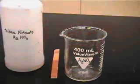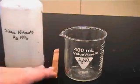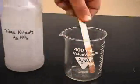This first experiment is a single replacement reaction in which copper from the solid metal strip will replace silver ions in the solution of silver nitrate.